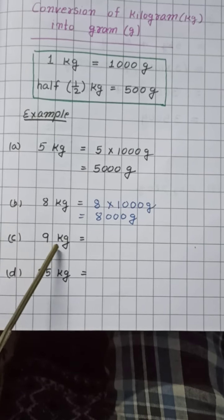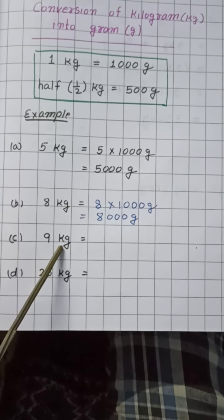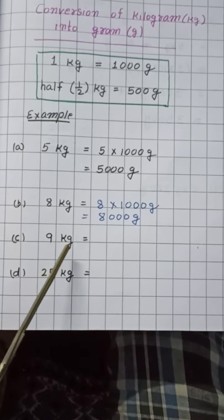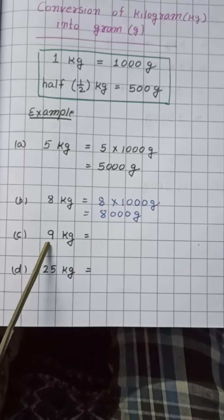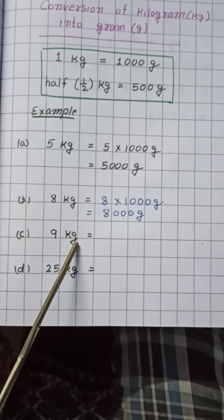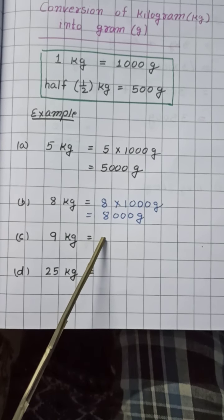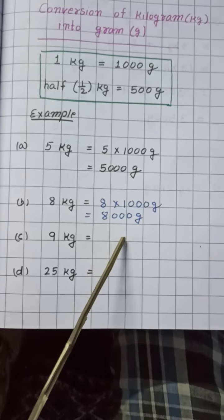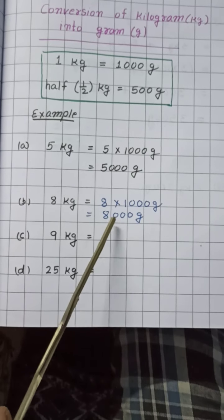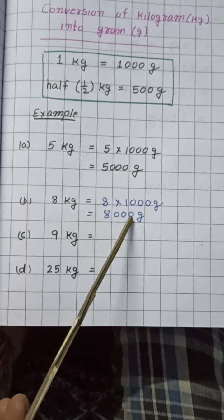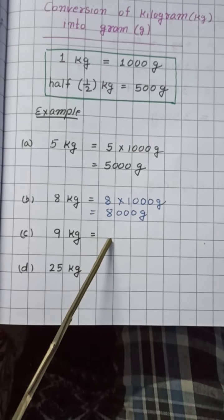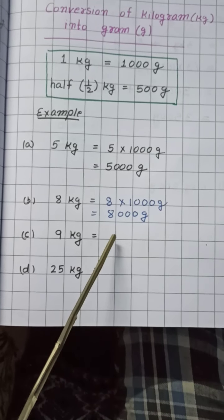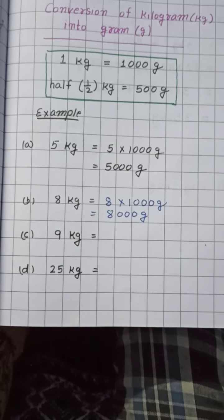Similarly, 9 kilogram. Children, you can write the answer directly. So what is the answer? 9 kilogram is equal to? We put 9 and how many zeros do we put? 1, 2, 3. So directly we can write 9 kilogram is equal to 9000 gram.